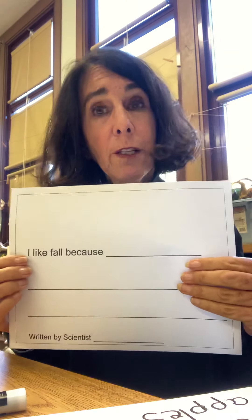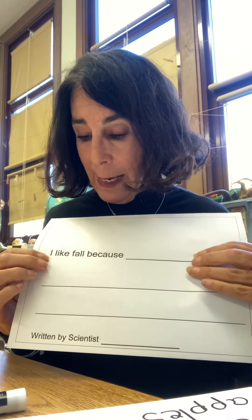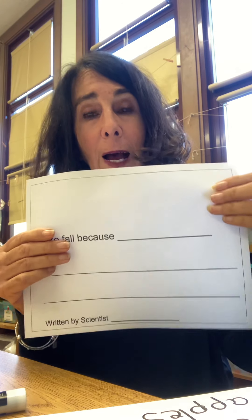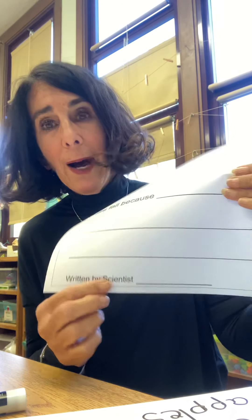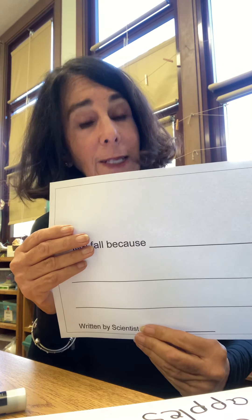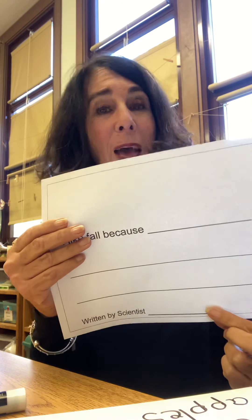Now I have my paper, and I started the sentence for you — I gave you a sentence starter, and it says: I like fall because. You can write a lot of different reasons, and up here you can draw some of the things that you like about fall. And then down here I wrote 'written by scientist,' because we've been studying fall and fall trees and leaves and science. So I'm tying in science and writing — written by scientist — and you're going to write your name.